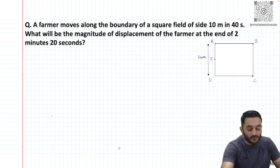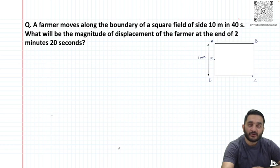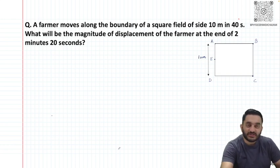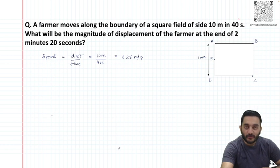Now let's take an example where a farmer moves along the boundary of a square field of side 10 meters in 40 seconds. What will be the magnitude of displacement of the farmer at the end of 2 minutes 20 seconds? There are various ways to solve this question.